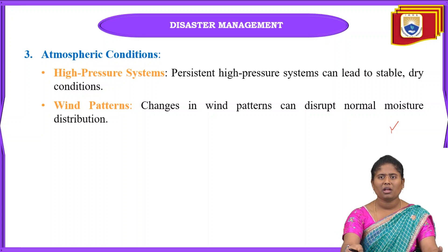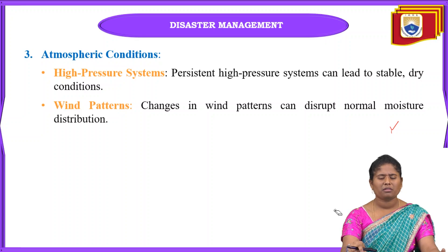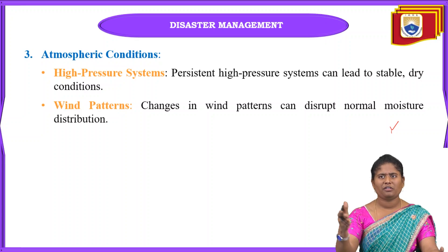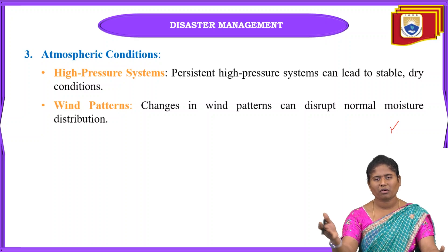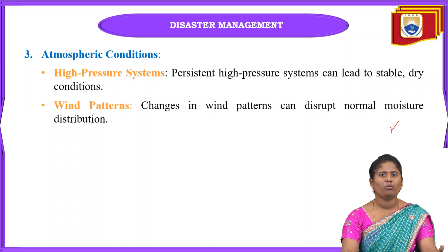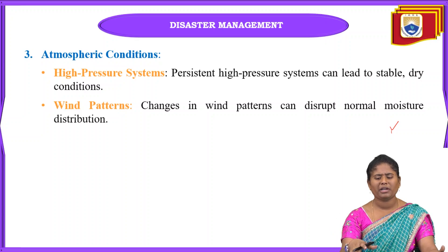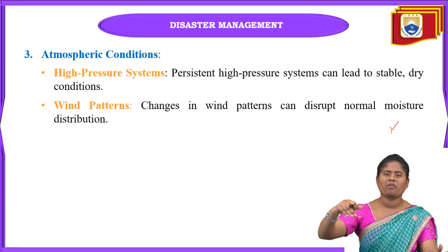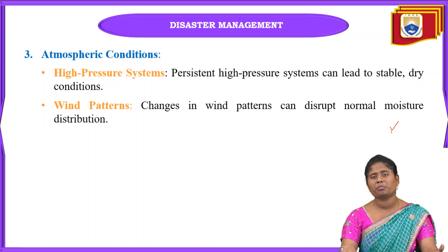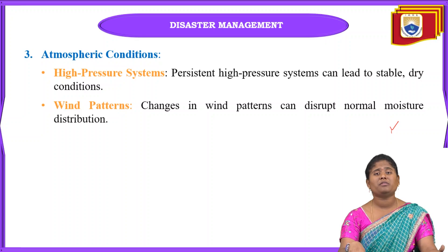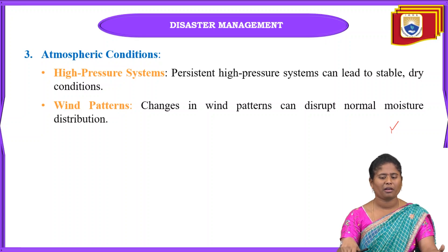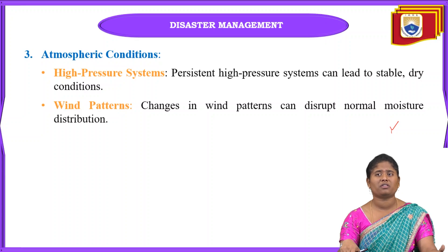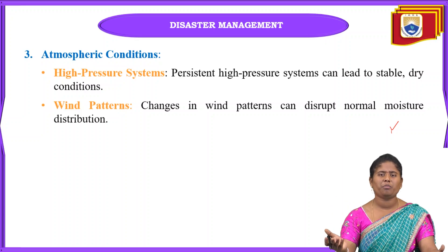Wind patterns also play a role. Changes in wind patterns can disrupt the normal moisture distribution. For example, cities like Mumbai and Visakhapatnam near beaches receive normal precipitation, but cities situated far from water bodies receive much less. Disturbances in wind patterns also disturb moisture distribution, contributing to droughts.